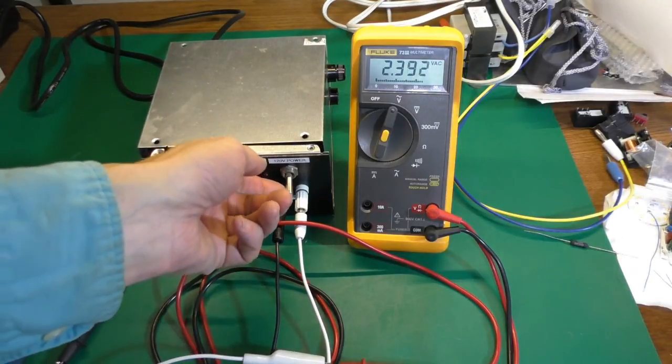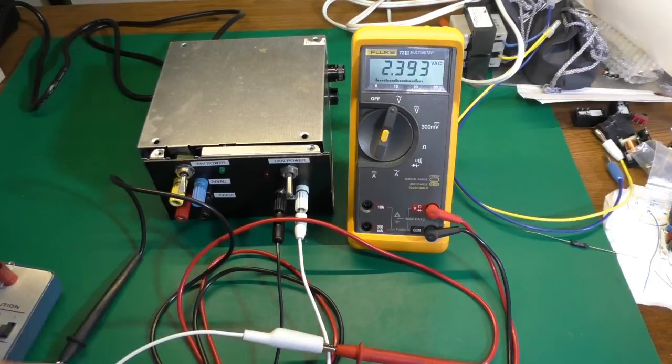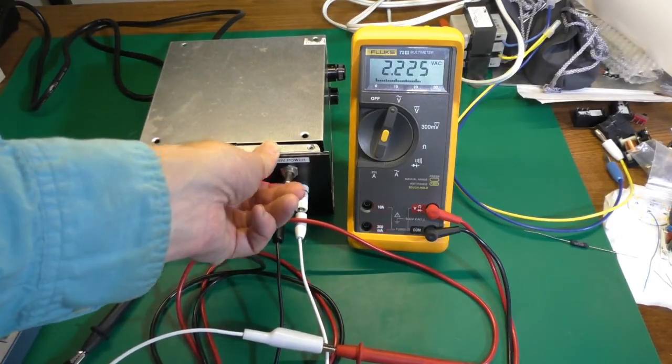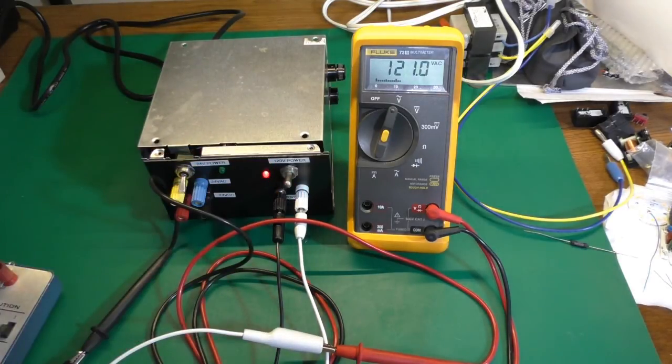Got it plugged in. I'll just, before we button it up, I'll turn it on and make sure everything works. Got the test leads on, got the voltmeter on. And there is our 120 volts AC. Indicator is working.